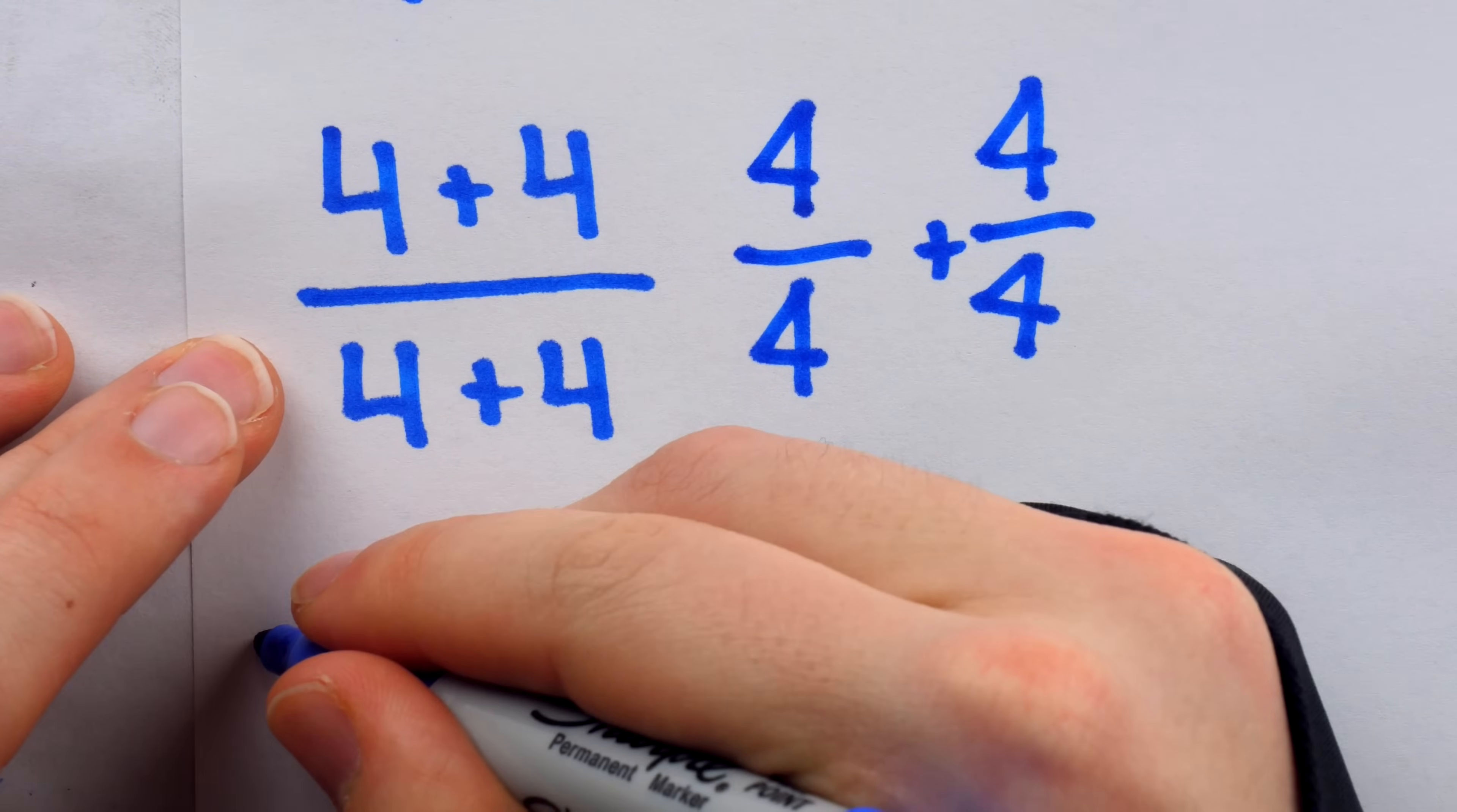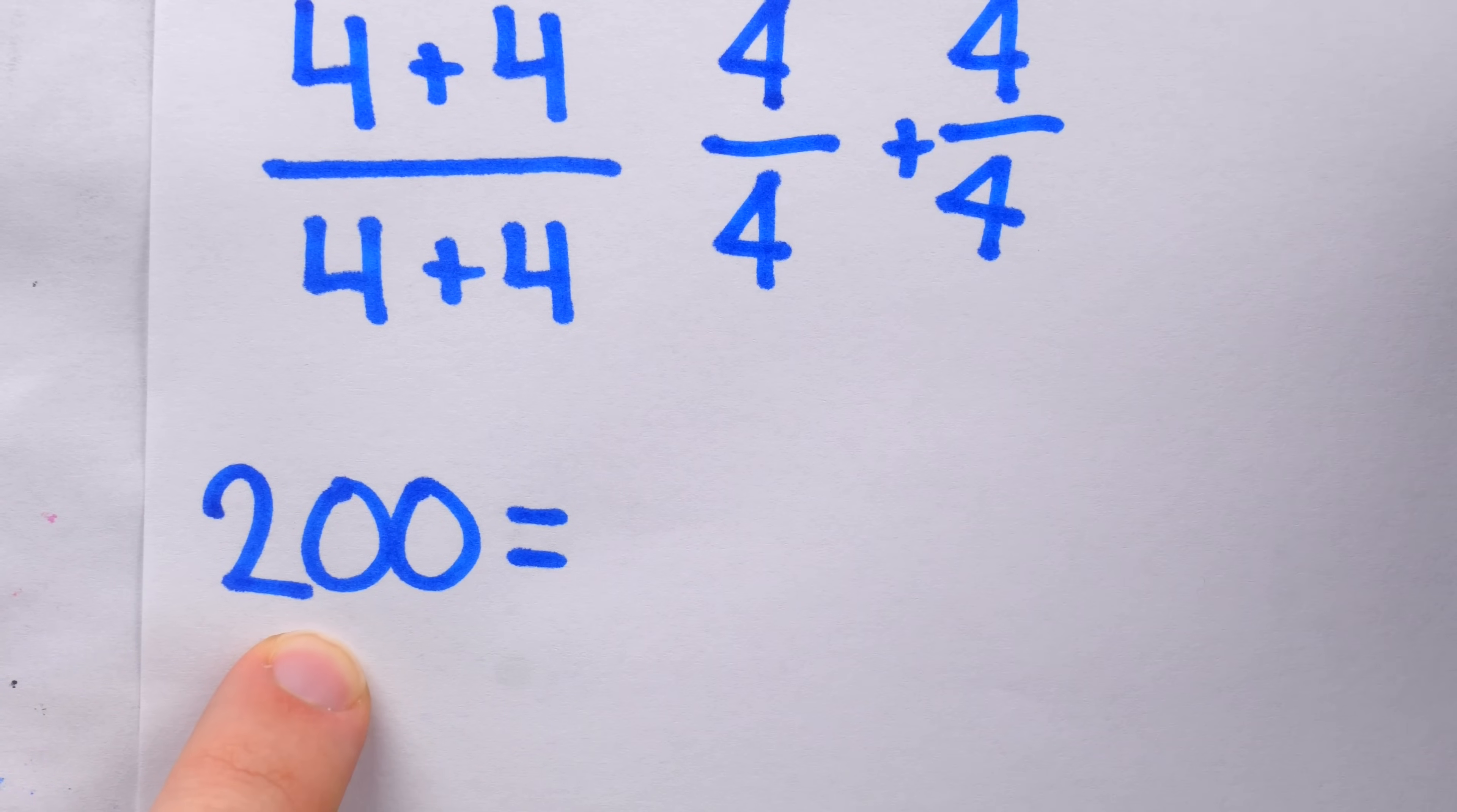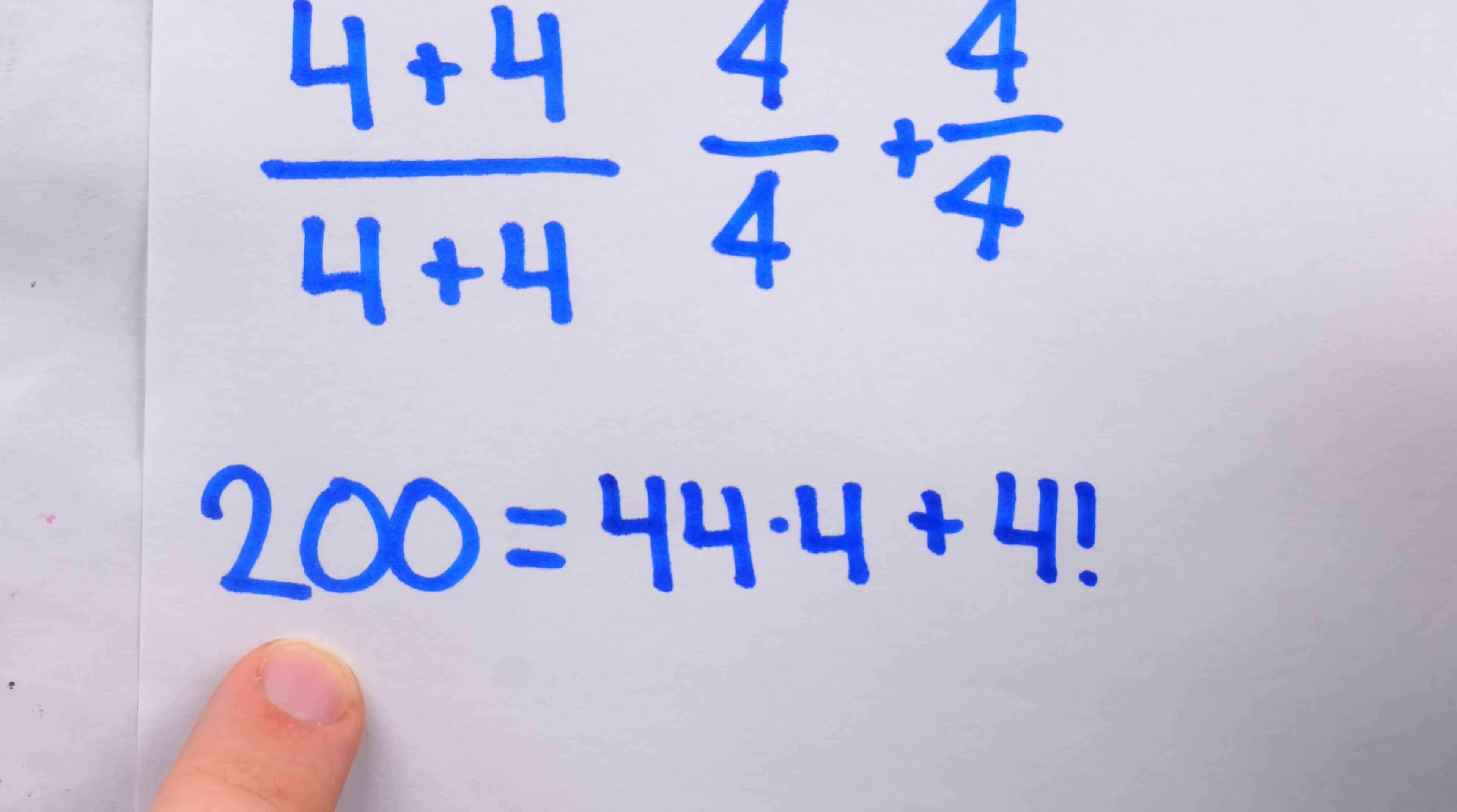We could write 1 using 4 fours and basic operations as 4 plus 4 divided by 4 plus 4. We could write 2 in a similar fashion: 4 over 4 plus 4 over 4. And it's not hard to come up with a lot of possibilities for other numbers as well. But what about 200? How do we express 200 using 4 fours? We're going to use the factorial to do it. Here's the answer: 44 times 4, which is 176, plus 4 factorial to give us that last 24 we need to get to 200.